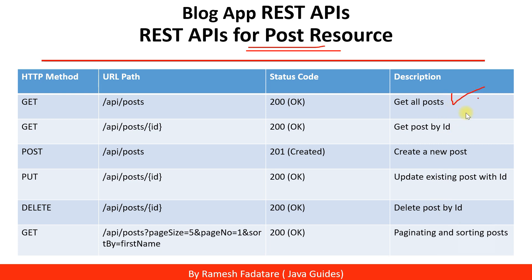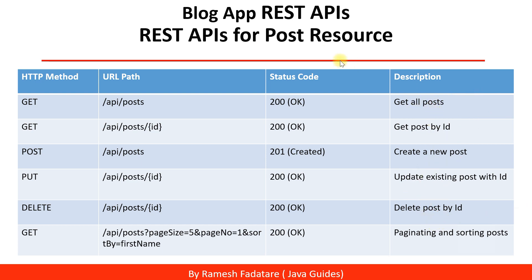I have listed: Get All Posts, Get Post By ID, Create New Post, Update Existing Post With ID, Delete Post By ID, and Pagination and Sorting APIs. These are the list of REST endpoints for the post resource, and I have added a few details for each REST API.